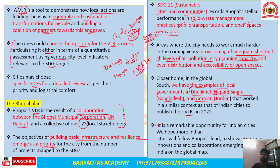Metropolitan cities like Bengaluru, Hyderabad, Pune, Nagpur, and Mumbai are expected to follow Bhopal and prioritize SDGs by coming up with Voluntary Local Review mechanisms. This will showcase urban innovations and collaborations emerging from India on the global map. Bhopal is the only city in India to have come up with a VLR, and other cities should follow Bhopal's path.